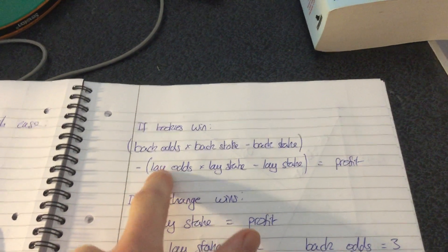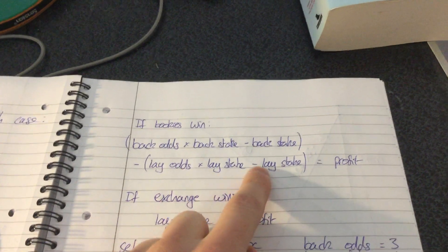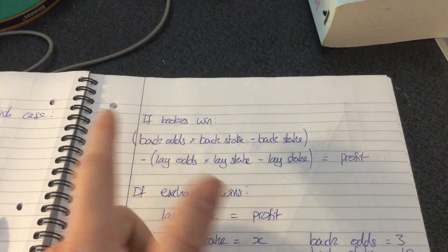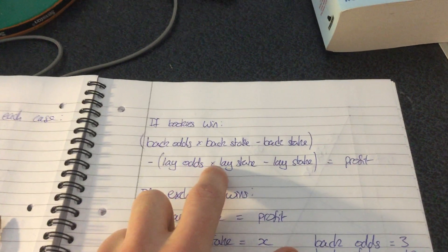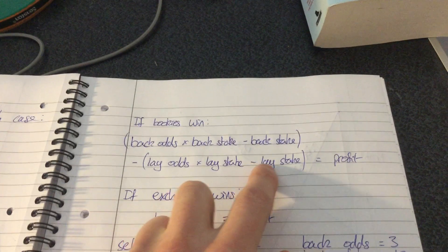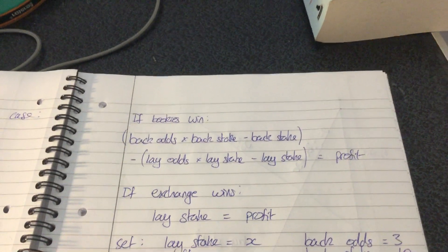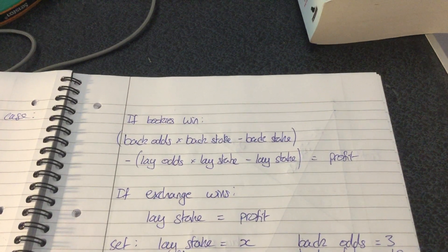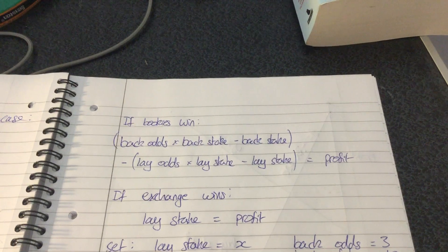So I need to subtract this, and that is exactly the same calculation - lay odds multiplied by lay stake minus the lay stake is equal to the profit. But we don't actually know what the lay stake is at the moment, that's what we're trying to find out.